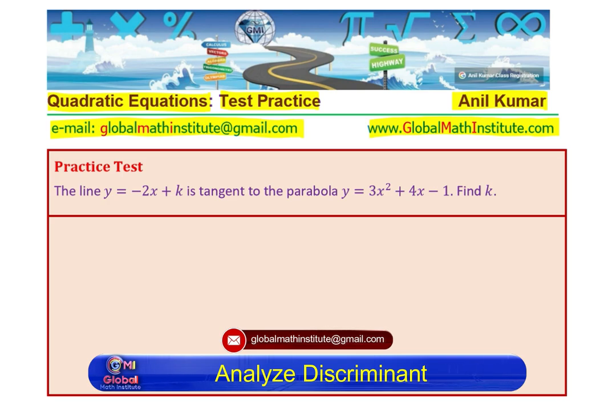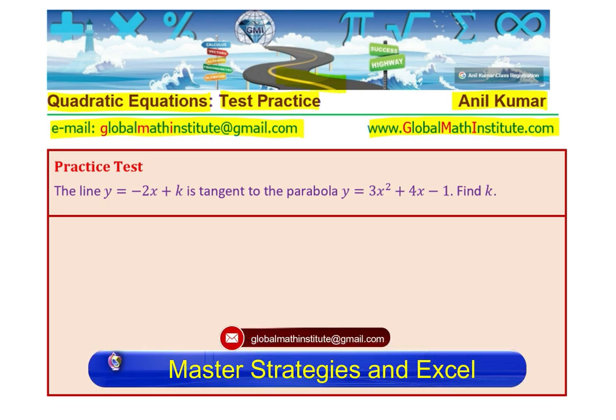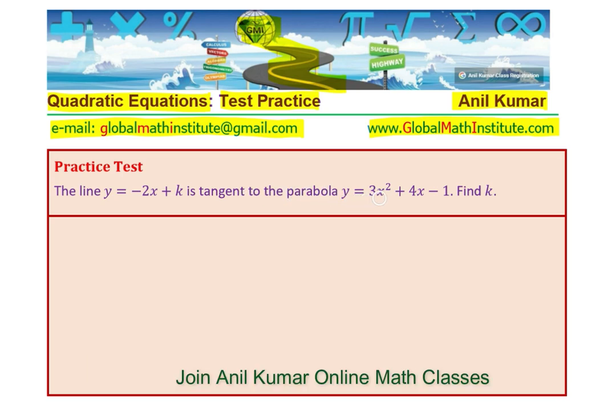The question here is: the line y = -2x + k is tangent to the parabola y = 3x² + 4x - 1. Find k. This is a very important question; sometimes it comes as a bonus question also.